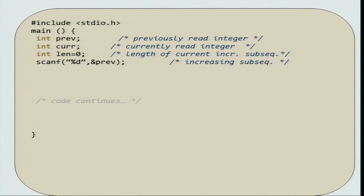In this session, we will try to code up the C code for finding the length of the longest increasing contiguous subsequence. From the previous discussion, we saw that we need at least three variables: one for storing the previous number, one for storing the current number, and a third for storing the length of the current increasing subsequence. We start by declaring all three variables and initializing length to 0.